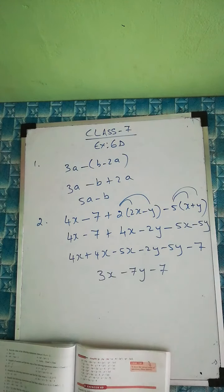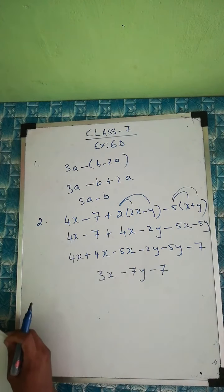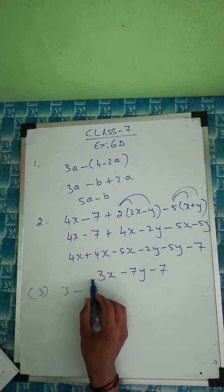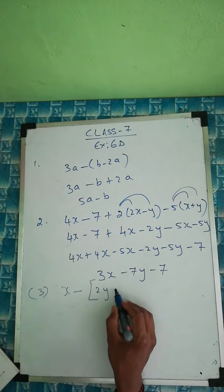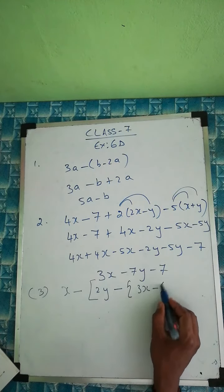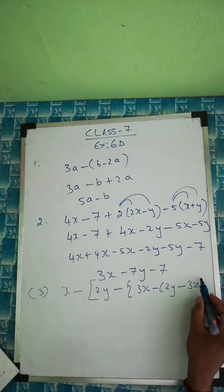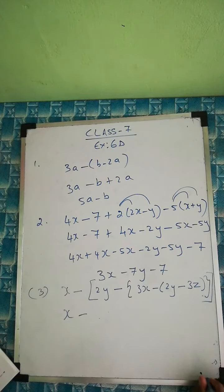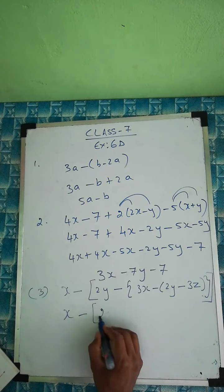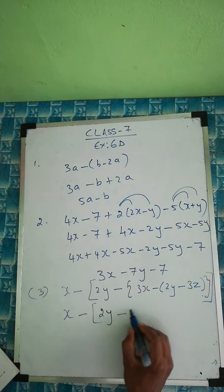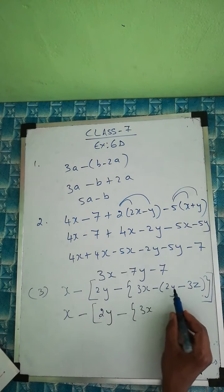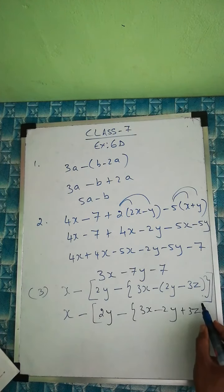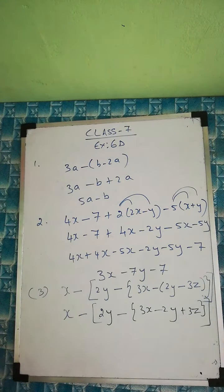Question 3: x minus bracket 2y minus 3x minus 2y minus 3z. The x stays the same. Now expanding the bracket: minus multiplies inside, so minus 2y, and minus times minus 3z becomes plus 3z.